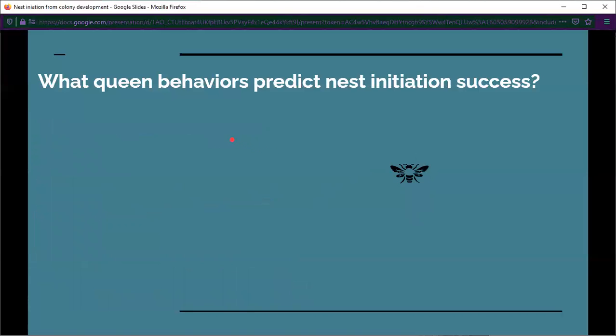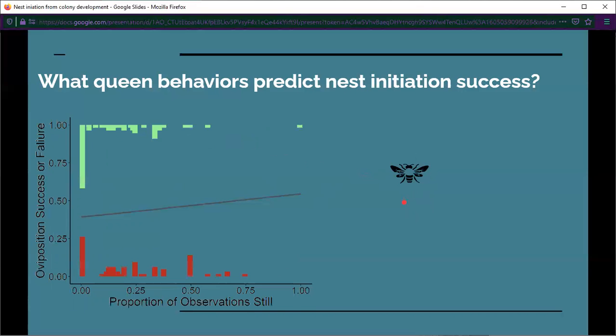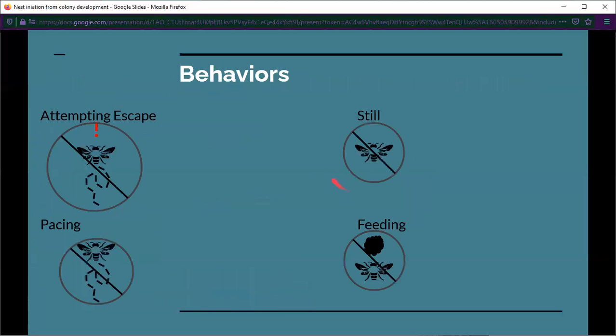We can ask the exact same question with queens who were still, and we find the exact same answer. There's no real trend. Then we can look at the four behaviors we observed: attempting escape, still, pacing, and feeding. None of the behaviors had any relation with nest initiation success.